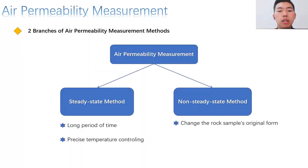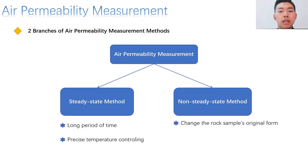The air permeability method contains two branches: the steady state method and the non-steady state method. The steady one requires a relatively long period of time and precise controlling of temperature, while the latter contains the process of pressing the rock to change its original form. Both are drawbacks of this method, but the air permeability method is still worth examining and its development is still emerging.